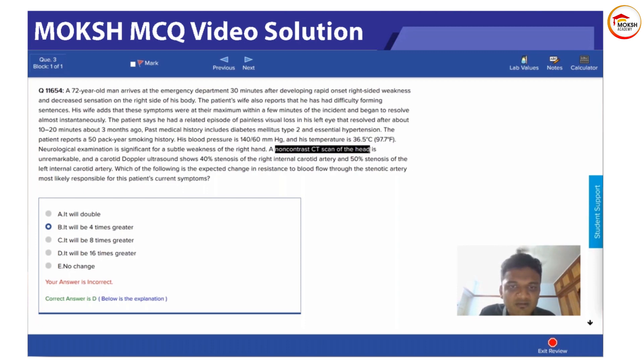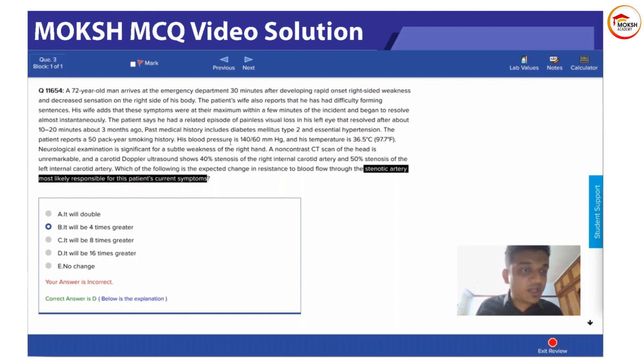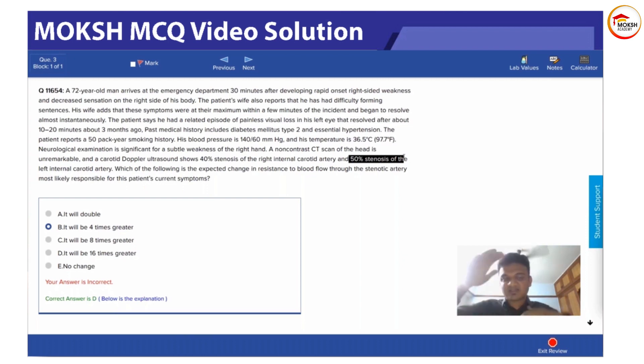There was a problem with this guy when they did a non-contrast CT scan of the head. It showed 40 percent stenosis of right internal carotid and 50 percent stenosis of left internal carotid artery. So what is the expected change in blood to the stenotic artery most likely responsible? Which of the following is the most responsible, 40 percent stenosis or 50 percent?